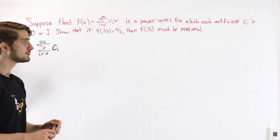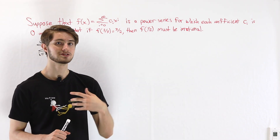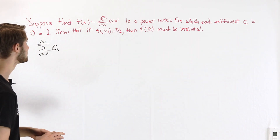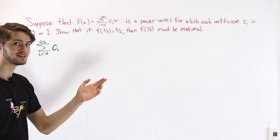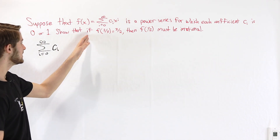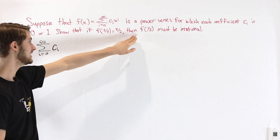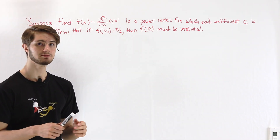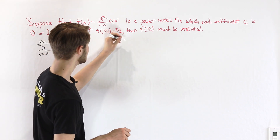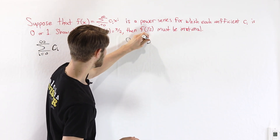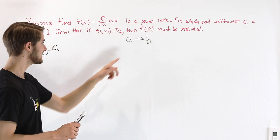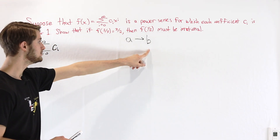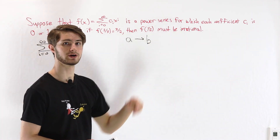There is an alternative way to approach this problem that simplifies it a lot, and that is to start from f(1/2). Notice that our problem is phrased as an if-then statement: show that if f(2/3) equals 3/2, then f(1/2) must be irrational. An if-then statement is one way to phrase a implies b. Here, a is the fact that f(2/3) equals 3/2, and b is the fact that f(1/2) must be irrational.